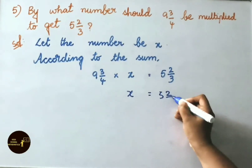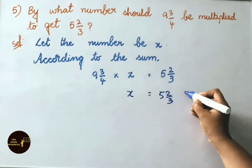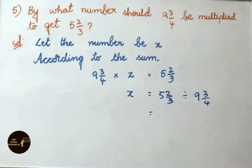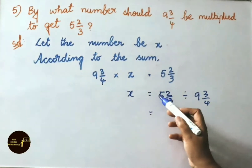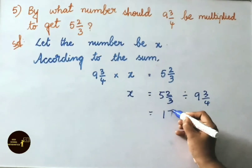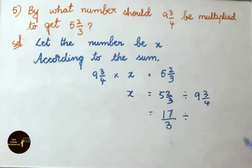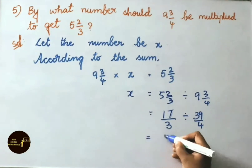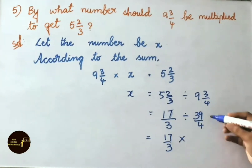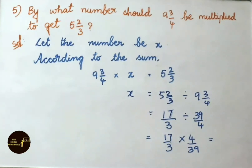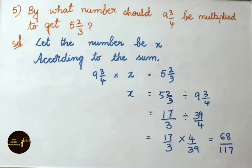So x equals 5 2/3 divided by 9 3/4. Convert mixed fractions to improper: 3 fives are 15, 15 plus 2 equals 17/3. Division symbol: 4 nines are 36 plus 3 equals 39/4. That equals 17/3. Convert division symbol to multiply and write the reciprocal of 39/4, that is 4/39. Multiply numerators: 17 fours are 68, by denominator 3 thirty-nines are 117. Therefore the answer is 68/117.